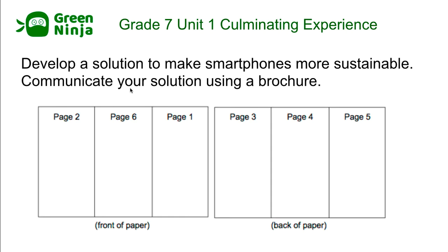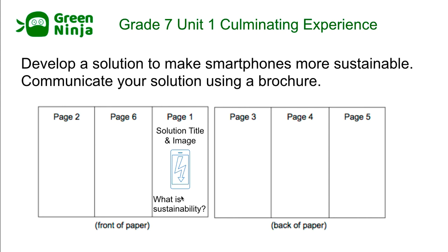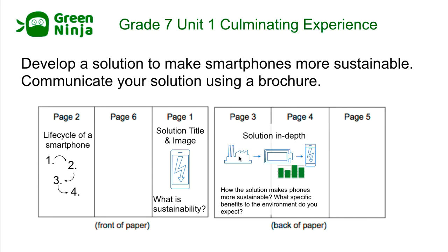In addition to proposing a solution, students actually need to communicate their solution using a brochure. The brochure has six panels with specific requirements for each panel. On page one, they have a title for their solution and a brief image, and they address the question: what is sustainability? On page two, they describe the life cycle of a smartphone. Page three is where they get to describe their solution in-depth and how it fits into that life cycle — how does the solution make the phone more sustainable, thinking about our diagram of sources and waste, and what specific benefits to the environment do they expect?